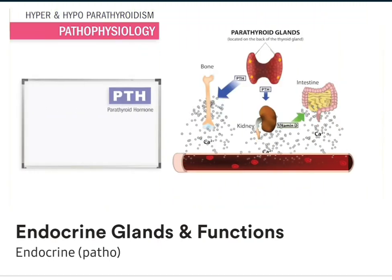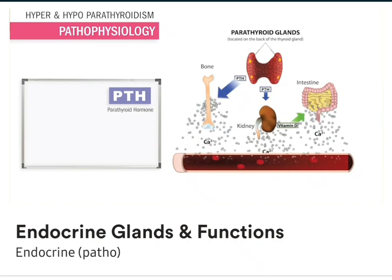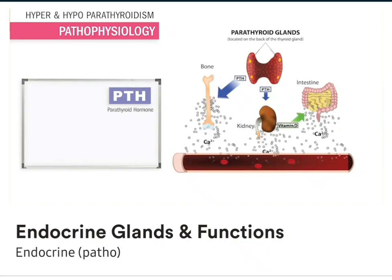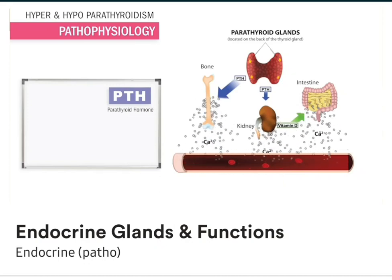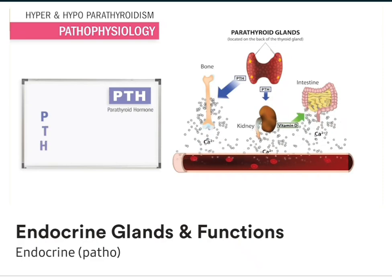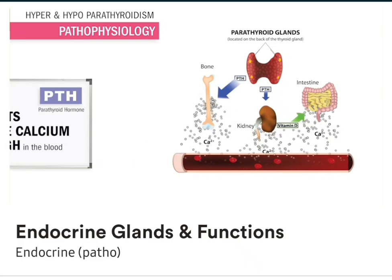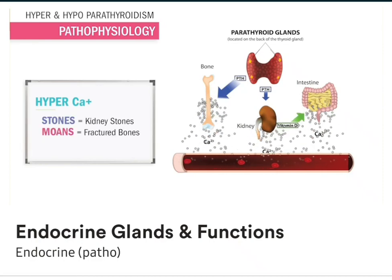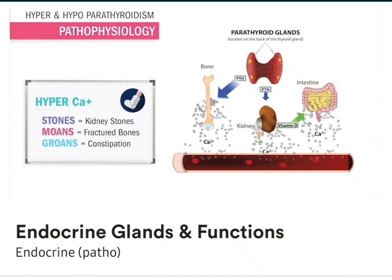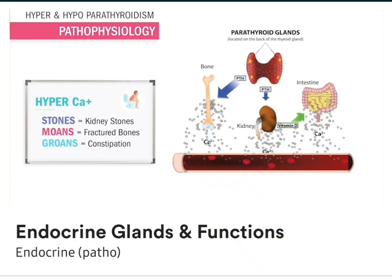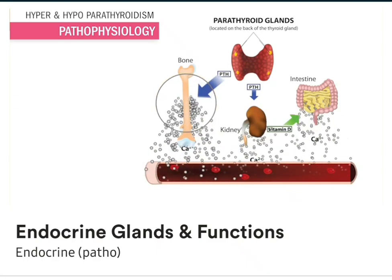With too much PTH and hyperparathyroidism, there is too much calcium in the blood — it's like every organ is being squeezed for their calcium. Think PTH is the bully taking all their lunch money. PTH puts the calcium high, so blood calcium goes up. We have stones, moans, and groans: stones in the kidneys, moans from broken bones, and groans from rock-hard bowels. PTH makes bones weak by taking calcium from their storages, making them brittle and a big risk for fractures.